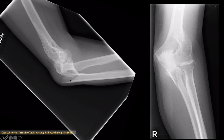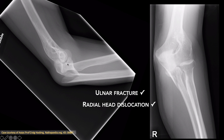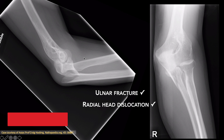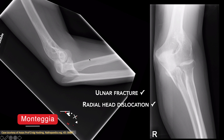Oblique fracture of the proximal ulna with displacement and angulation. Humero-ulnar alignment is maintained. The radial head is dislocated posteriorly. There is marked soft tissue swelling. The injury pattern is in keeping with a Monteggia fracture-dislocation.